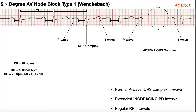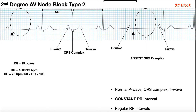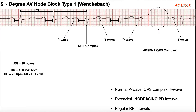Second degree AV node block has two types: type 1 and type 2. Notice in both, there are QRS complexes that are dropped. The type 1 second degree block still has normal P waves, normal QRS complexes where they're not dropped, and normal T waves. The interesting thing about a type 1 block is that the PR interval starts out elongated, but it actually starts to increase in length every successive cycle.